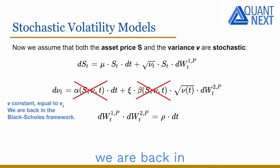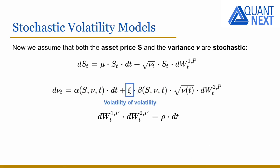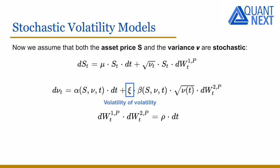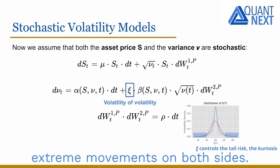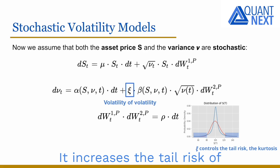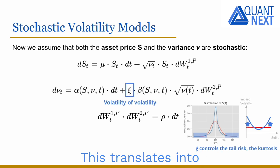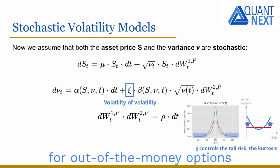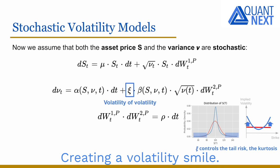Nu zero controls the volatility level. Xi is the volatility of volatility, or vol-of-vol. A higher vol-of-vol increases the probability to have extreme movements on both sides. It increases the tail risk of the return distribution — its kurtosis. This translates into higher risk and higher prices for out-of-the-money options and an increase of the implied volatility on the wings, creating a volatility smile.